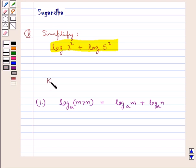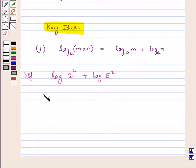So this is the key idea that we use in this question. Let's proceed with the solution now. We need to simplify the expression log of 2 square plus log of 5 square. So this is equal to log 4 since 2 square is 4 plus log 25 since 5 square is 25.